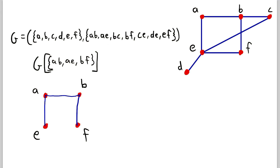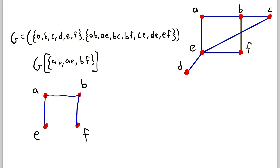Now let's go back to our edge-induced subgraph. We have a nice notation to describe it: this is the subgraph of G induced by the edge set containing AB, AE, and BF. This tells us we have those three edges and only the vertices incident with them — no other vertices. We use this same notation for vertex-induced subgraphs; if the set is a set of vertices we're talking about a vertex-induced subgraph, but since this is a set of edges, we know we're talking about an edge-induced subgraph.